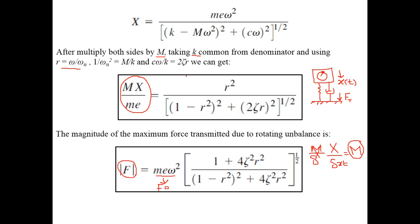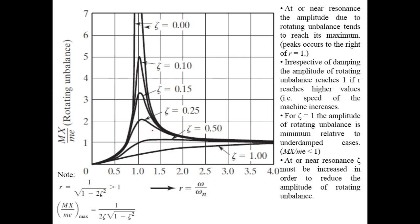We plot the expression MX/(me) against r for various damping values. We notice that irrespective of the damping values, you can reduce the rotating unbalance if you operate at r around 0.55 or lower. For any value of r that is 0.55 or less, your rotating unbalance will be less than one — which is a good result.